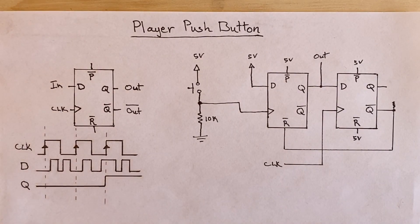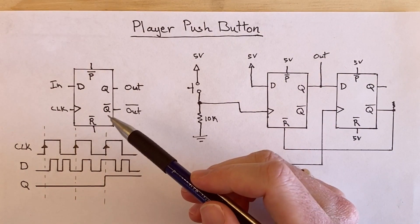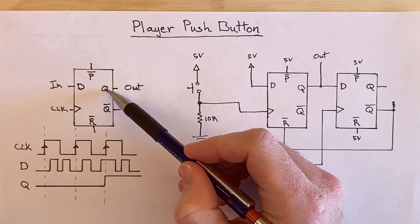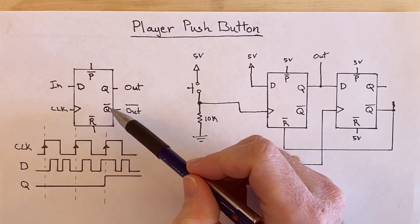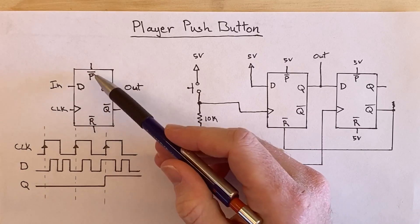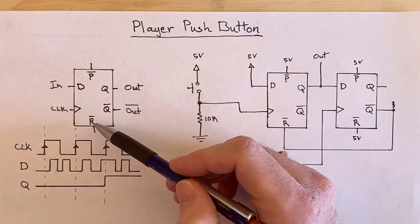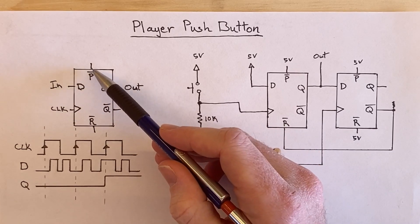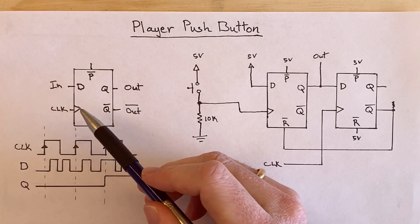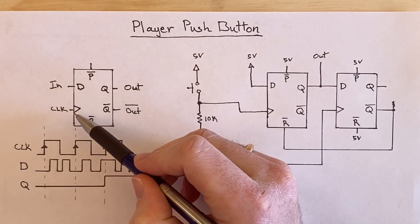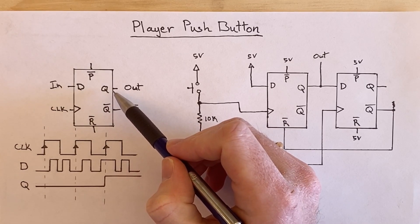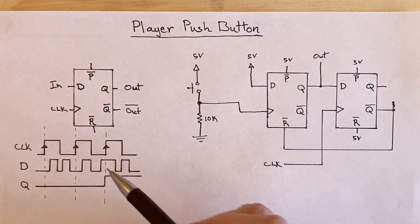The D flip-flop is really one of the coolest pieces of logic. It has a data input D and an output Q, and also the complement of Q (Q-not). It has a reset and a preset which are override mechanisms - you bring reset low to force Q to 0, or bring preset low to force Q to 1. If you don't want to use them, keep both high. It's clocked, and whenever the positive edge of the clock hits, whatever is at the input gets transferred to the output.